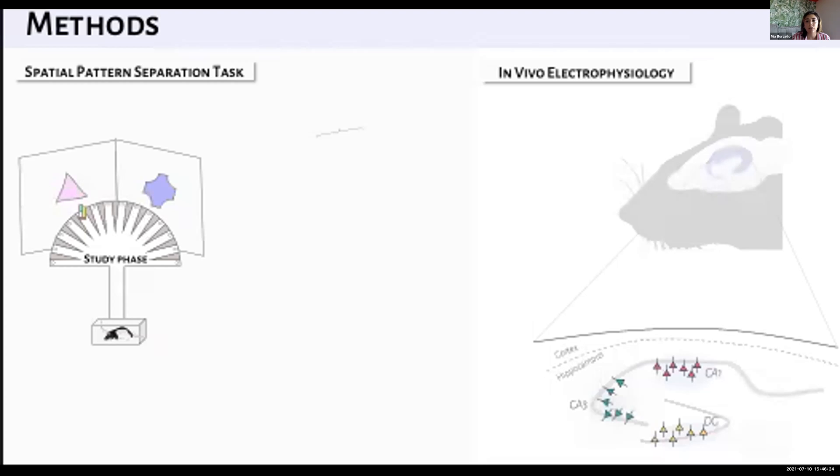We developed this paradigm shown here to assess spatial pattern separation ability. Rats are taught to enter the maze and approach an object in a particular spatial location in order to receive a cheerio reward underneath. They must then remember that location as distinct in order to differentiate it from other possible foil object locations and return to that location during a subsequent test phase.